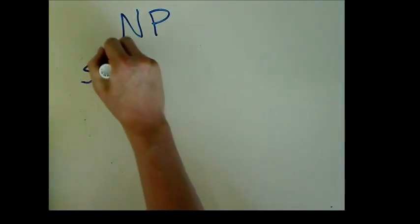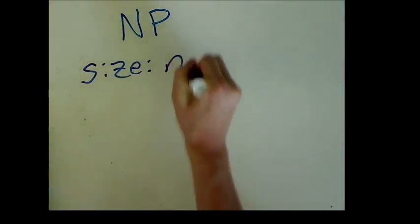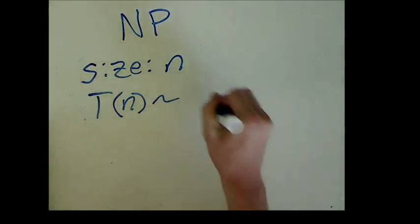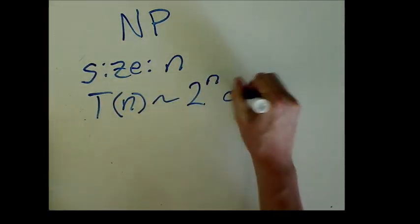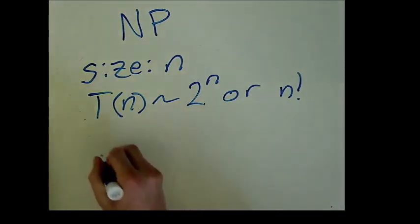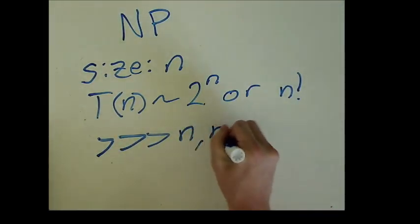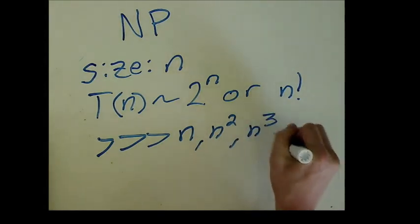This means that as the size n of the problem increases, the time required to solve that problem t increases as an exponential of n or n factorial, which is much slower than a polynomial of n, meaning n, n squared, n cubed, and so forth.